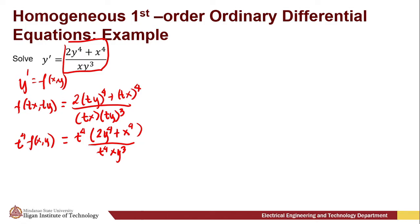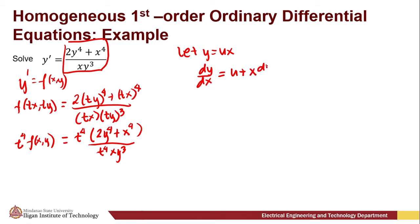So we can apply the substitution method. We let y = ux. For this example, we're going to use the substitution y = ux. So dy/dx is equal to u + x · du/dx, obtained by differentiating y = ux with respect to x.